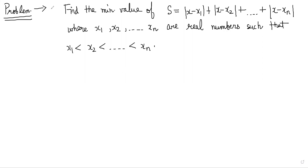We have a problem where we have to find the minima of the expression S = |x - x1| + |x - x2| + ... + |x - xn|, where x1, x2, ..., xn are real numbers and x1 < x2 < ... < xn.